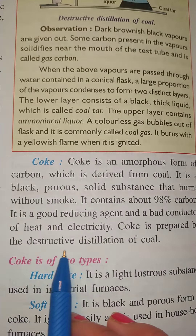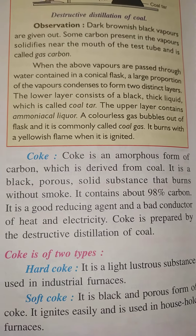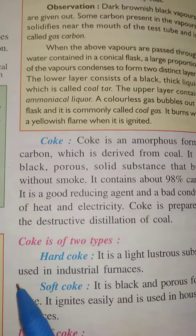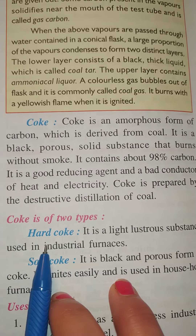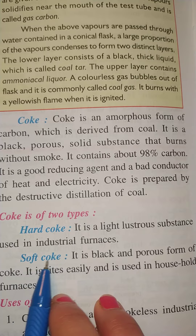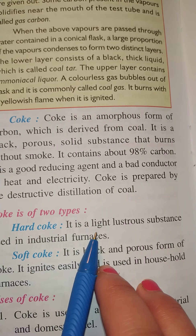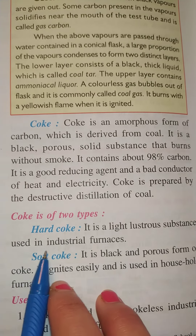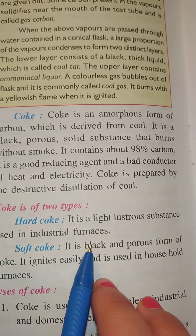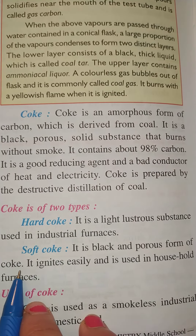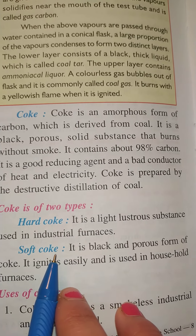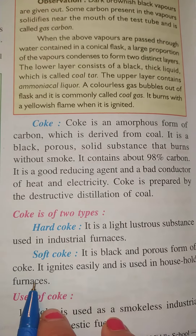Coke is prepared by the destructive distillation of coal. Coke is of two types: hard coke and soft coke. Hard coke is a light, lustrous substance used in industrial furnaces. Soft coke is a black and porous form of coke that ignites easily and is used in household furnaces.